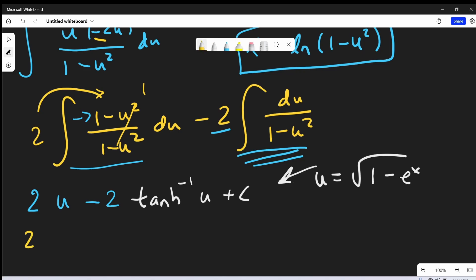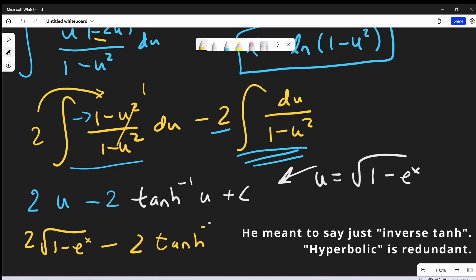And for our final solution, we're going to have 2 square root of 1 minus e to the x minus 2 times the inverse hyperbolic tanh of our u, which is just going to be square root of 1 minus e to the x plus c.